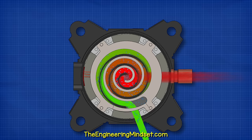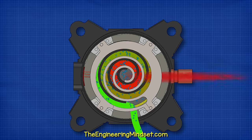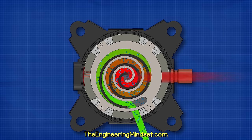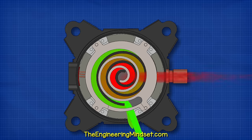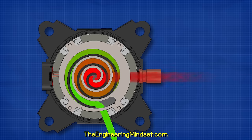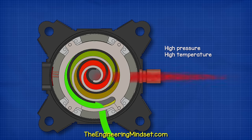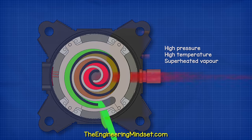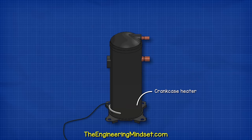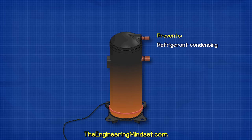Scroll compressors can handle small amounts of liquid. It can pass through without damaging the scroll plates. The refrigerant exits the compression chamber as a high pressure, high temperature, superheated vapor and flows to the condenser. A crankcase heater is sometimes fitted. This keeps the shell warm in cold climates and prevents the refrigerant condensing inside. This prevents backflow and also stops the lubricating oil from diluting.